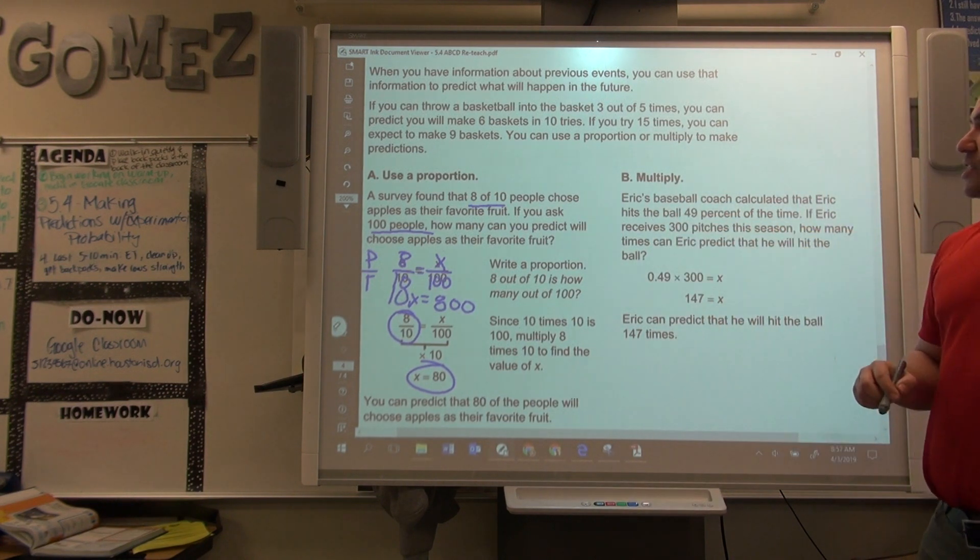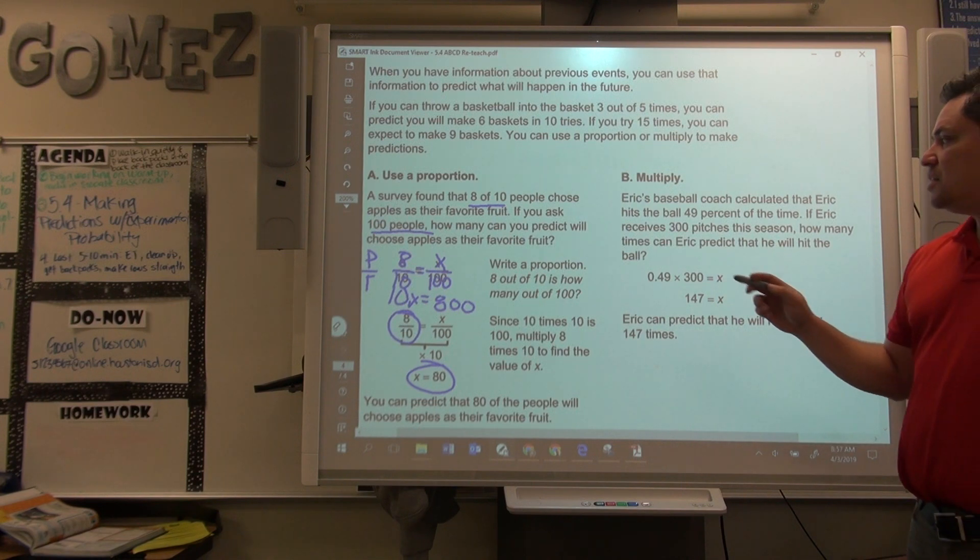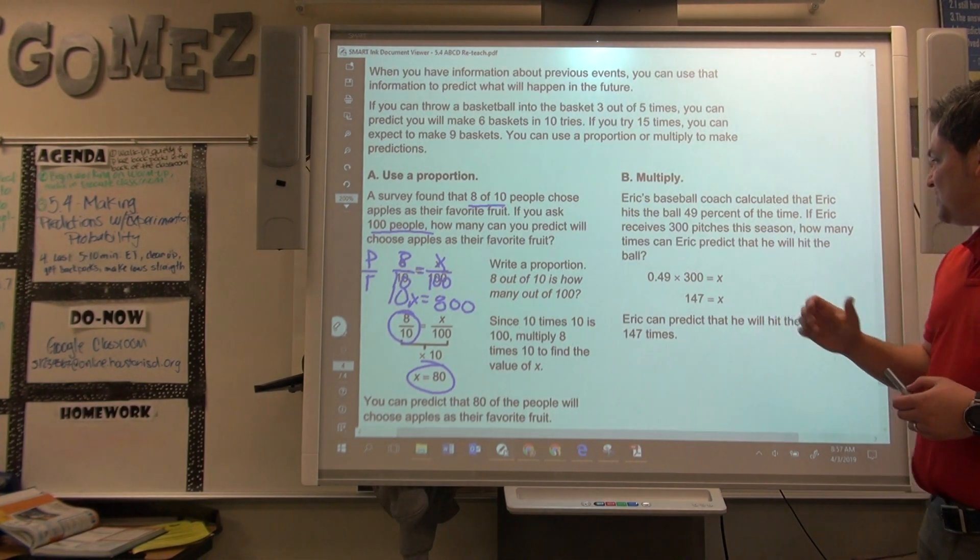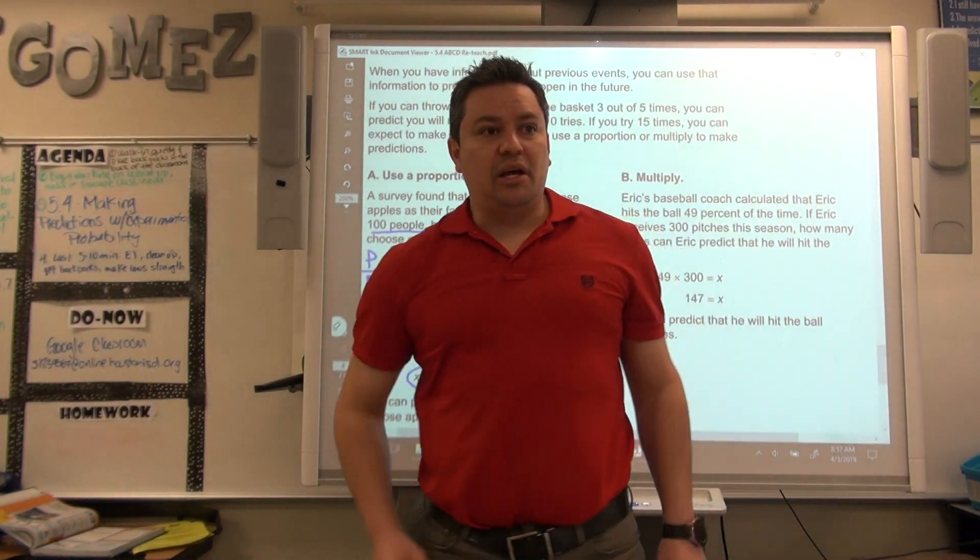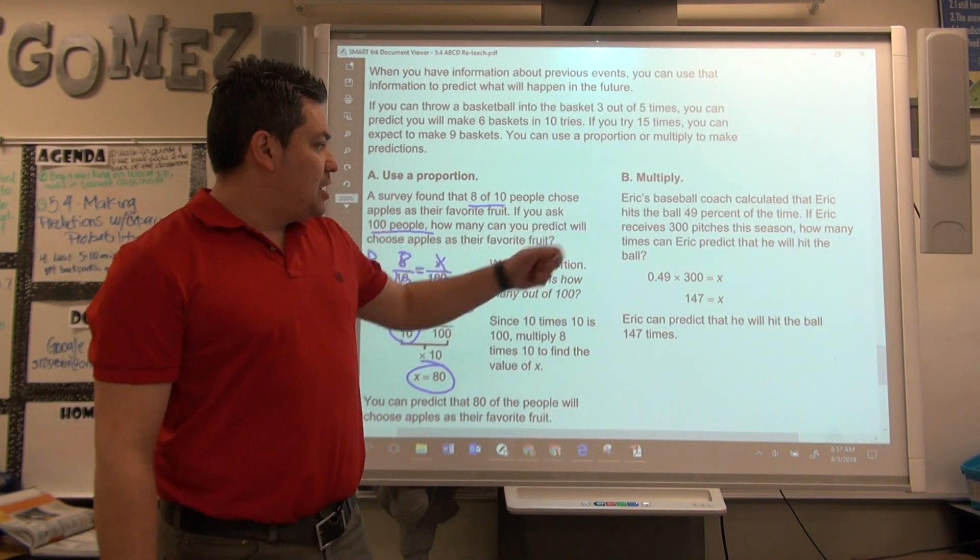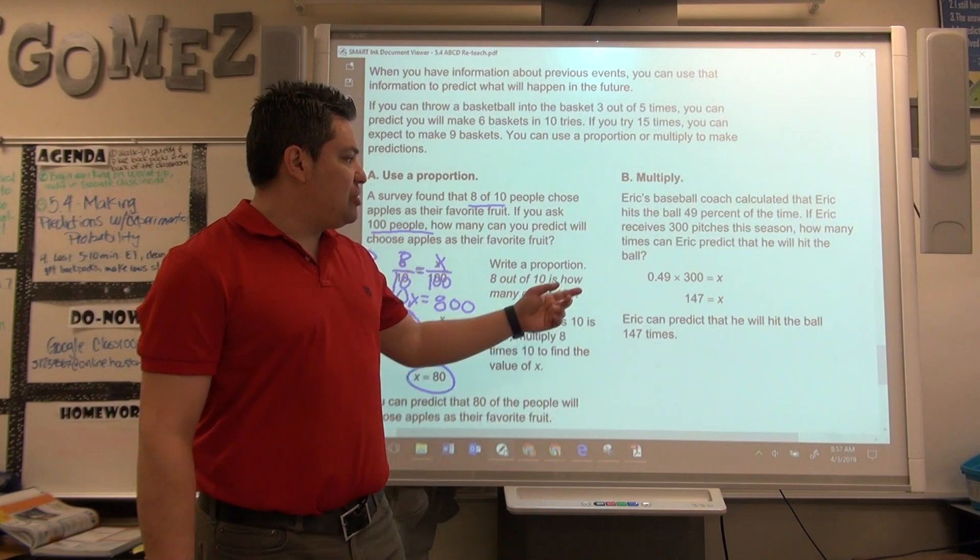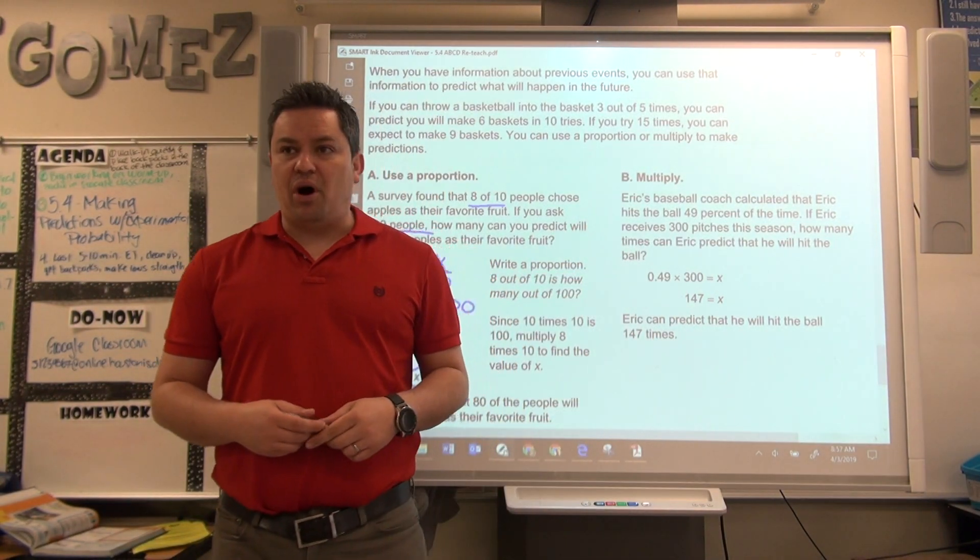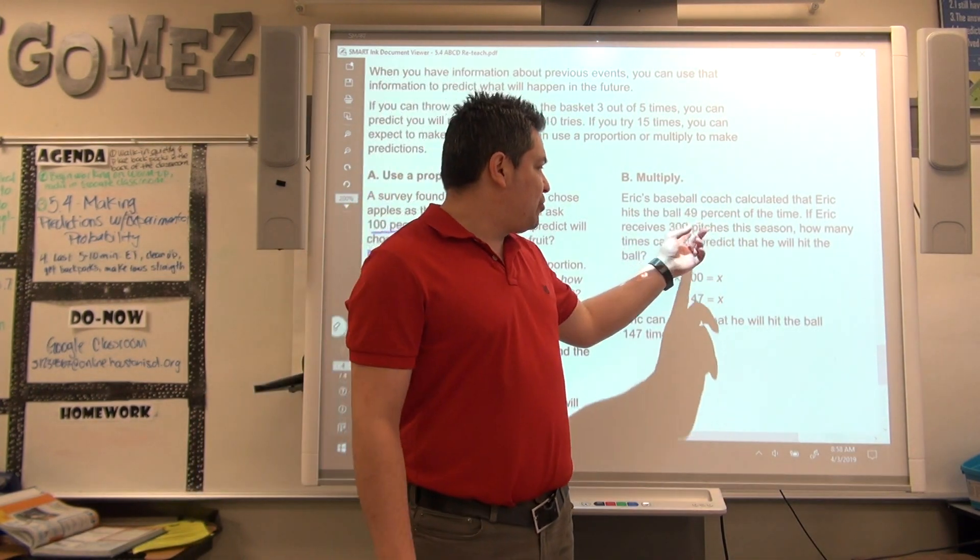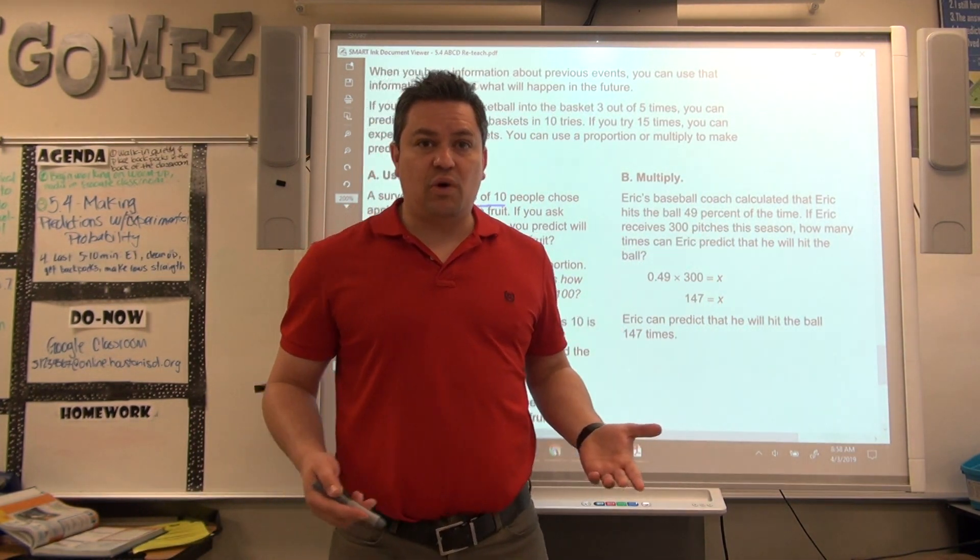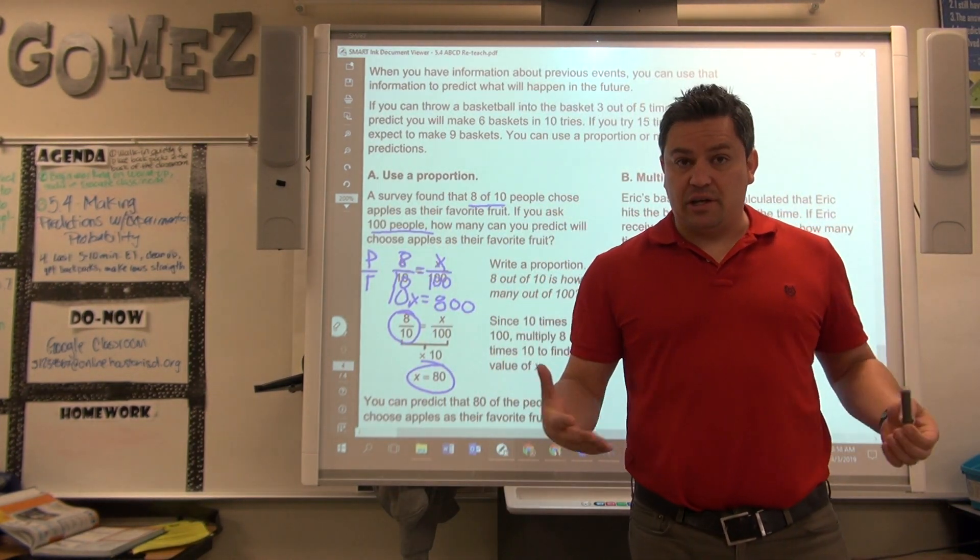Now, whenever you're given the percent, like in this problem, it's faster to do it this other way. It says, the method by using multiplication. Eric's baseball coach calculated that Eric hits the ball 49% of the time. So, almost half of the time, he hits it. If Eric receives 300 pitches this season, how many times can Eric predict that he will hit the ball? Well, 49 is really close to 50. So, half of 300, it'll be really close to 150. That's a really good prediction.